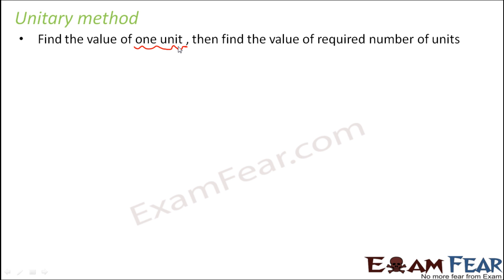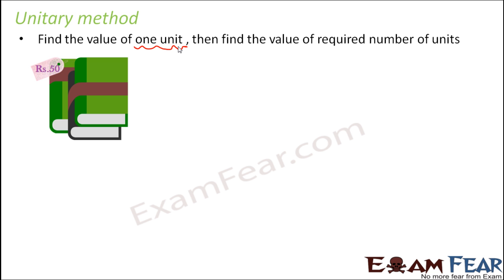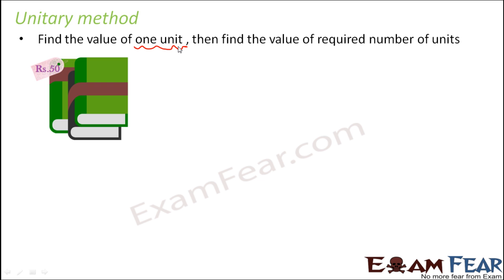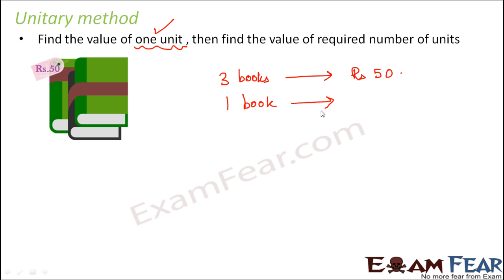What do we mean by one unit? Let us take this example. Three books cost rupees 50. So what we do is first find the value of one unit — in this case, one book. So first let us find out the cost of one book. The cost of one book would be rupees 50 divided by three.